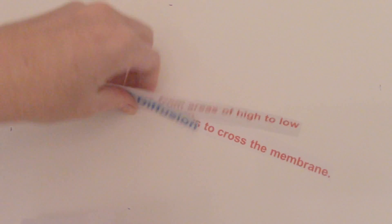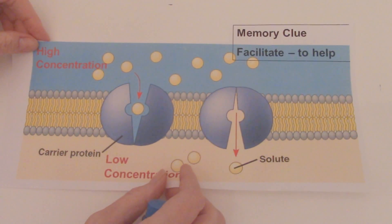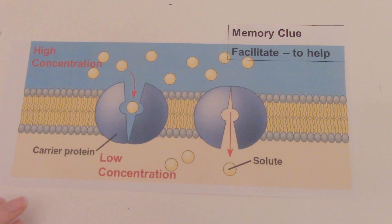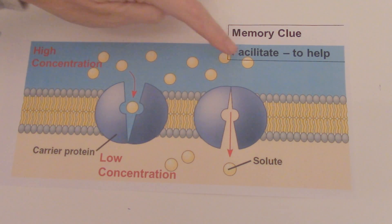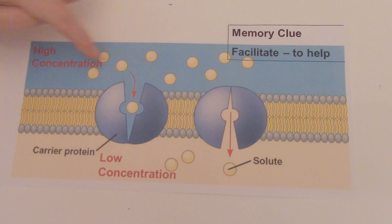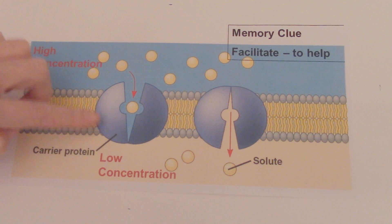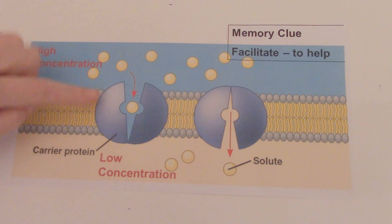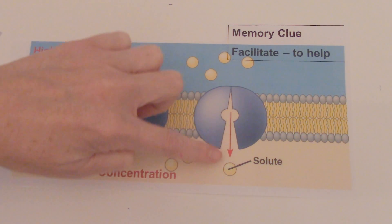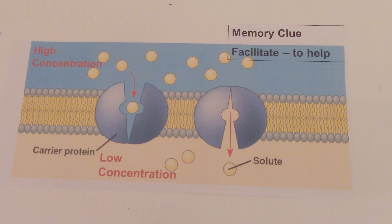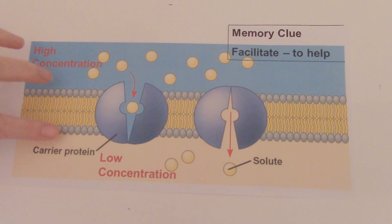Looking at a picture of facilitated diffusion: here we have the area of high concentration with more molecules up top, and low concentration below. We can see the protein channel in action — it opens up, the large molecule is engulfed in, and then it's released to the area of low concentration. These are carrier proteins. Remember: facilitate means to help, so facilitated diffusion needs helper proteins in order to move large molecules.